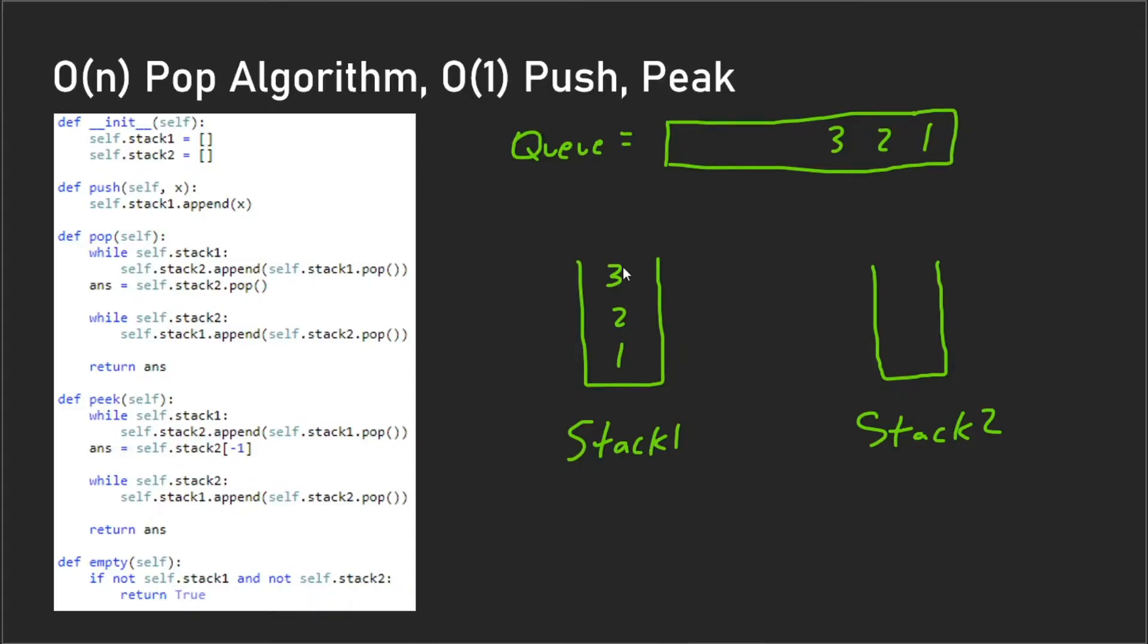We would expect to get one here, but if we were to just pop from this stack one we would get three. So what we want to do instead is pop every element in stack one and move it over to stack two. So we pop three and add that to stack two, we pop two and add that to stack two, and then we pop one and add that to stack two. Then we would pop on stack two and we would get our one here.